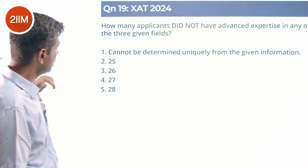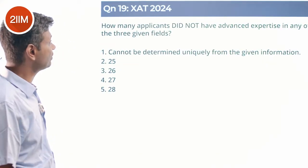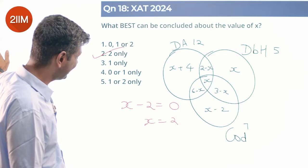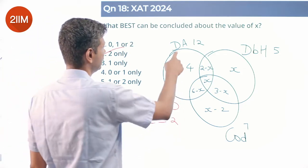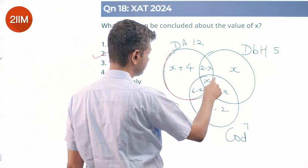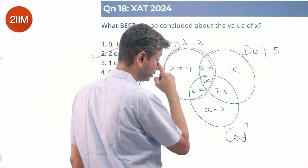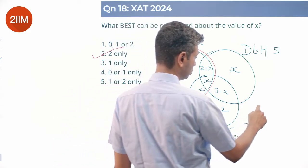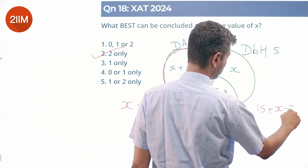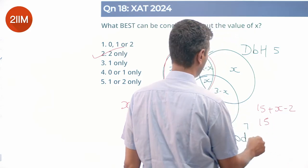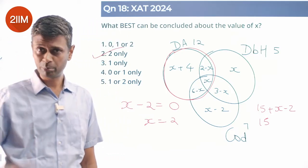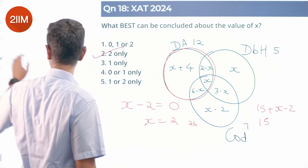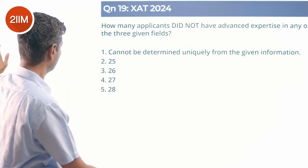How many applicants did not have advanced expertise in any of the three given fields? Totally there are 41 applicants. How many did not have? So I need to add everything up. This whole bunch adds up to 12. 3 minus X plus X is 3. 12 plus 3 is 15. 15 plus X minus 2. X is 2, X minus 2 is 0, this is 15. The whole union is 15. Totally there are 41 people, so outside should be 41 minus 15, just 26 people. Look at the choices, hopefully 26 is there as one of the choices.